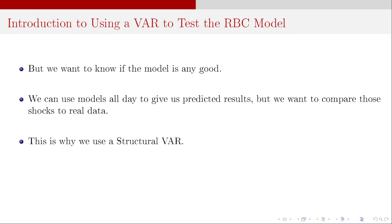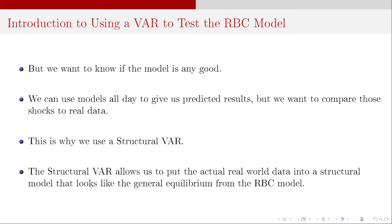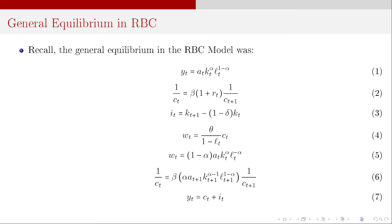This is why we use a structural VAR — we can take the existing economic theory from the real business cycle model, use the structure from the RBC model, namely the set of equilibrium conditions, and tailor that to a VAR that's in its reduced form. The reduced-form VAR is malleable — we can get it into a form that would be consistent with what the real business cycle model predicts. If we do that, we can hopefully derive impulse responses that are consistent with RBC predictions. The structural VAR allows us to put actual real-world data into a model that looks like the general equilibrium from the RBC model.